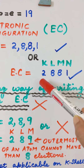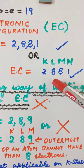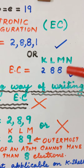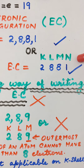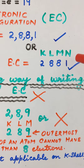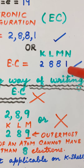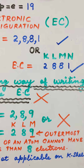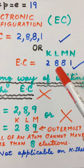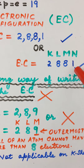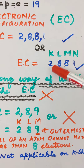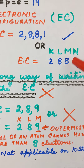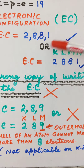Therefore, the correct way of writing the configuration is to put two electrons in the K shell, eight electrons in the L shell, eight electrons in the M shell, and one electron in the N shell. Since N is now the outermost shell and it has only one electron, the correct electronic configuration for potassium is 2, 8, 8, 1.